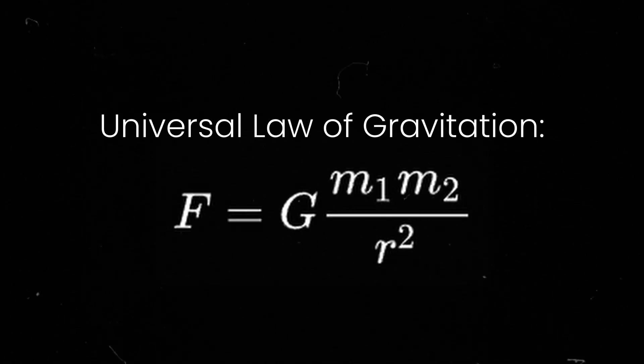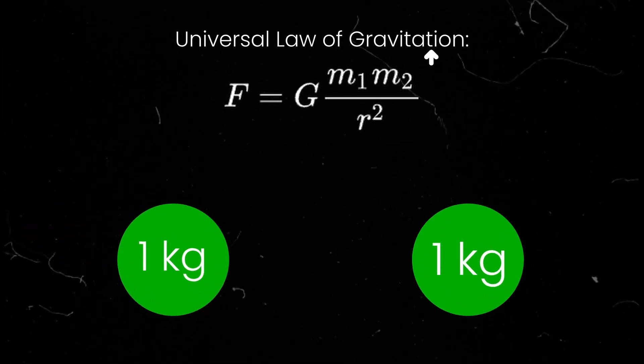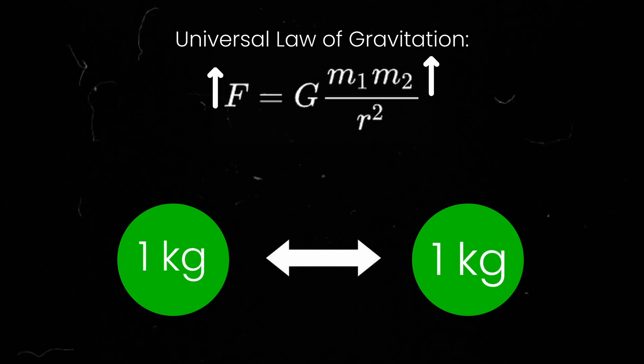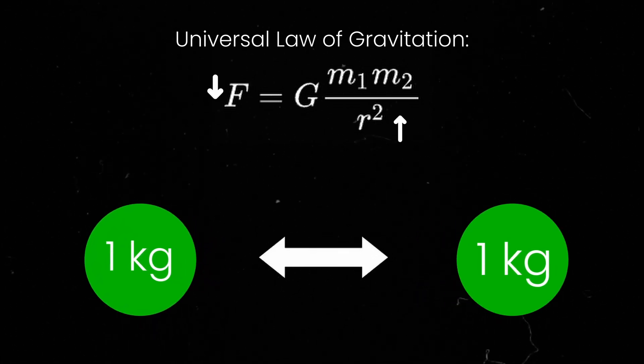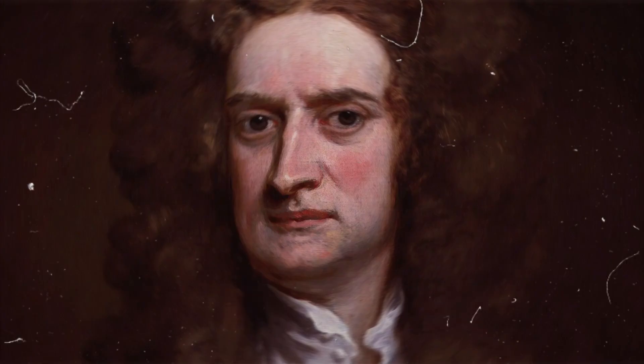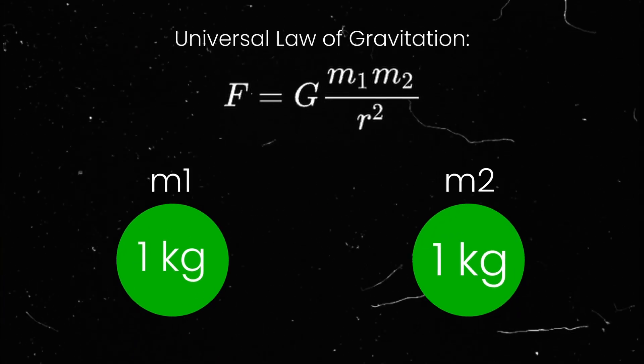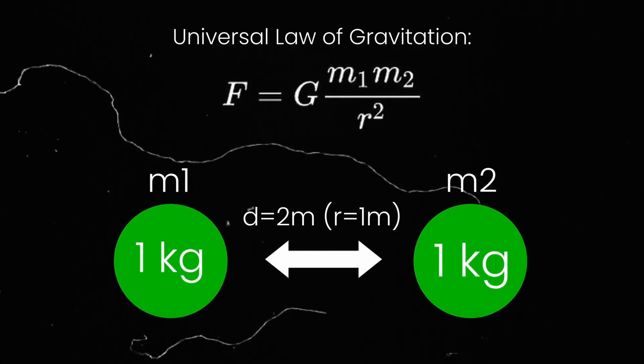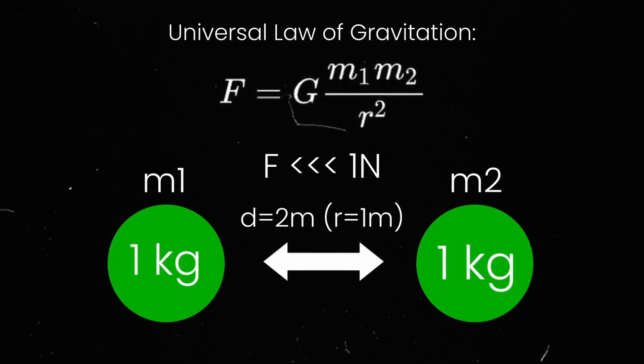So Newton devised an equation and theory to explain this. It basically says that as either of the two objects get heavier, then the gravitational pull between them must get stronger by the same proportion. And if the two objects are farther away from each other, then the gravity gets weaker by an even greater proportion. But there was a problem with this theory, and Newton knew this. If Newton had two hypothetical planets that were a meter apart from each other, and each weighed one kilogram, then the gravitational force between them would not be one newton. It would be way less than that. Otherwise, the gravitational force between you and the chair would be so strong that you physically would not be able to get out of it.